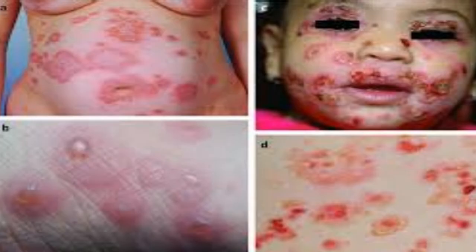Erythema multiforme, bullous type, shows subepidermal bullae formed by pronounced edema of the papillary dermis, which also contains fibrin and inflammatory cells. Other changes of erythema multiforme are seen around and within the bulla.